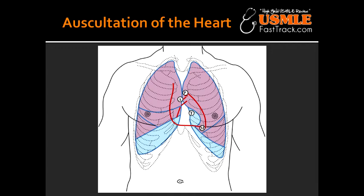Atrial septal defect causes a left-to-right shunt, meaning more blood comes into the right side of the heart. This increases flow through the pulmonary valve, causing a pulmonary flow murmur, and also a diastolic rumble due to increased flow across the tricuspid valve. Importantly, blood flow across the actual ASD does not cause a murmur because there is no pressure gradient. The increased right-sided blood volume leads to murmurs, which eventually include a louder diastolic murmur due to pulmonary regurgitation from a dilated pulmonary artery.